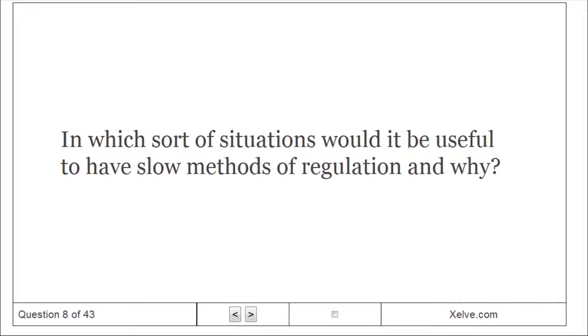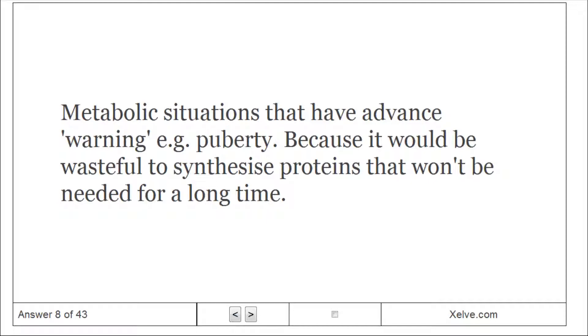In which sort of situations would it be useful to have slow methods of regulation and why? Metabolic situations that have advanced warning, e.g. puberty, because it would be wasteful to synthesize proteins that won't be needed for a long time.